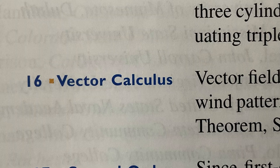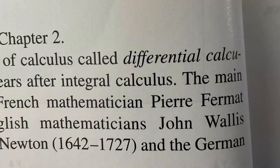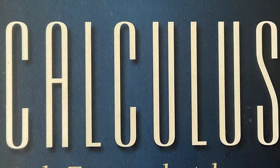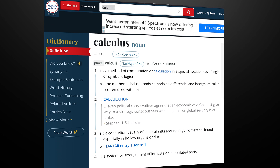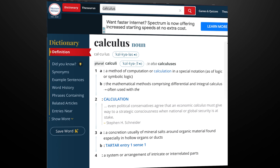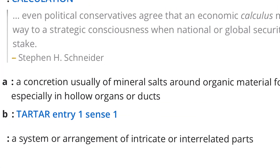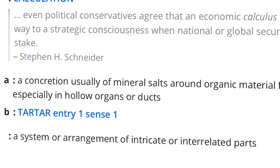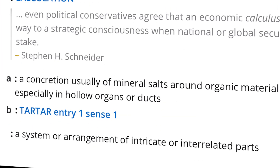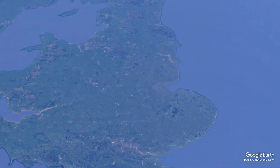Okay, so hear me out. Calculus is a stupid name. When you look into it, the name itself does nothing to describe what actually happens in calculus. Newton was hailed as a scientific hero, a genius, for his invention of calculus and the connection he made with classical physics.